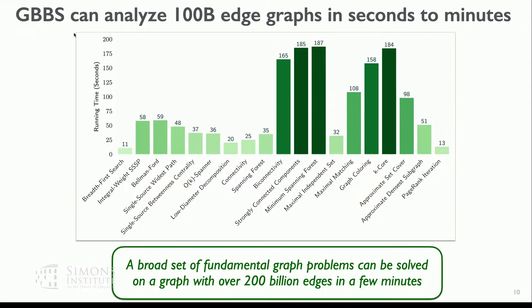On the Web Data Commons hyperlink graph, we can solve all of these problems in under three minutes. You have to load your graph in memory, and using a commodity multi-core machine — a machine with 72 cores and a terabyte of DRAM — you can solve all of these problems in under three minutes. For most static problems, there should be a good parallel algorithm that achieves this kind of time. You don't have to wait hours. Just by using efficient shared memory algorithms, you should be able to get running time on the order of a few minutes.